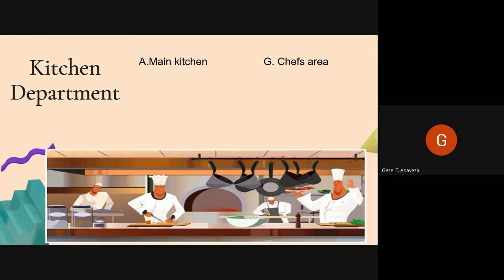The Chef Area is where the executive chef is seated and where a lot of planning takes place. The Pantry is a room where beverages, food, dishes, and household cleaning supplies are stored. These items are stored within this section for easy access during kitchen operations.